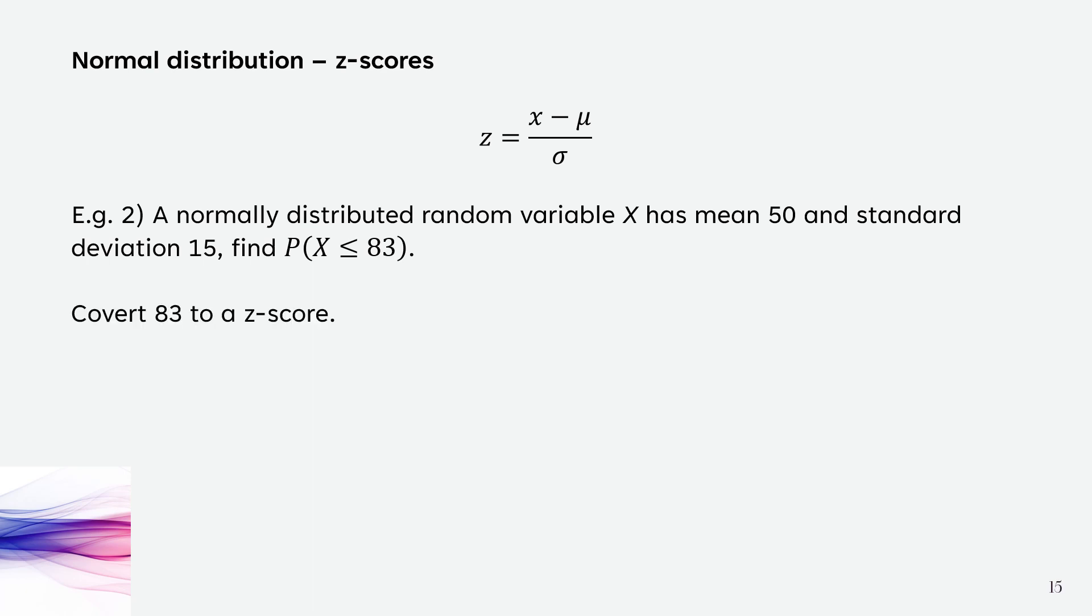Firstly, we're going to convert the 83 to a z-score using our formula. Converting 83 minus the mean of 50 over the standard deviation of 15 gets us a z-score of 2.2.